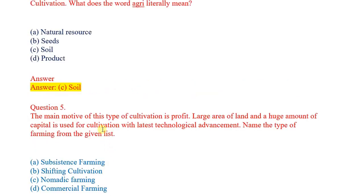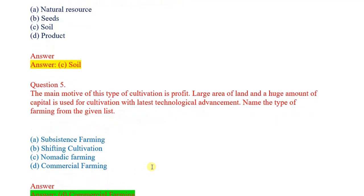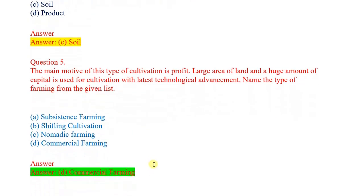Question number 5: The main motive of this type of cultivation is profit. Large area of land and huge amount of capital is used for cultivation with latest technological advancement. Name the type of farming from the given list. Options: subsistence farming, shifting cultivation, nomadic farming, commercial farming. Correct answer: commercial farming.